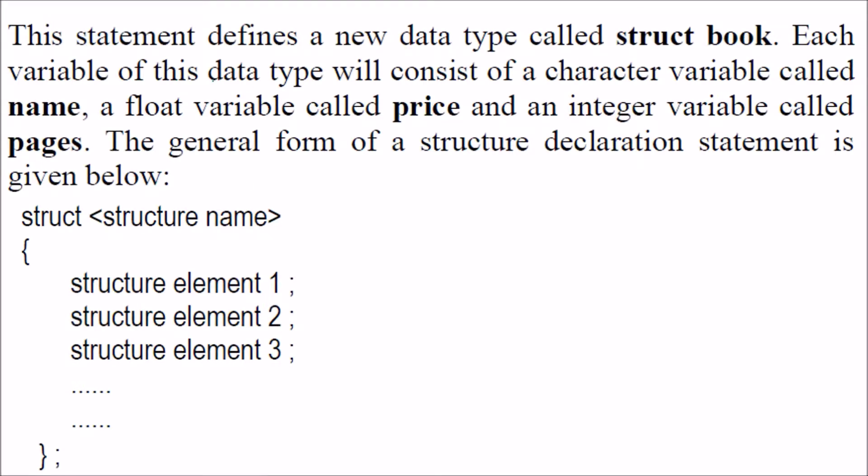This statement defines struct book. We have name, price, and pages. These are dissimilar entities. If you want to generalize it, struct and then structure name. These are different elements followed by the semicolon.